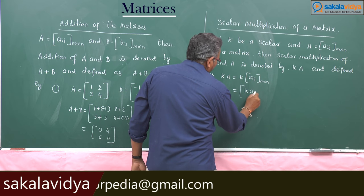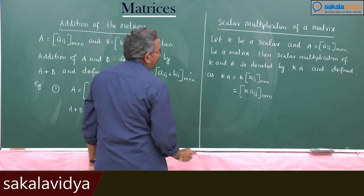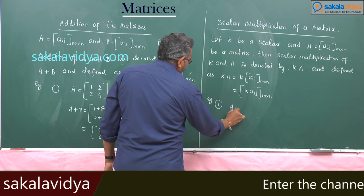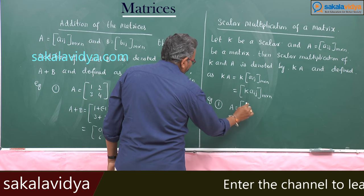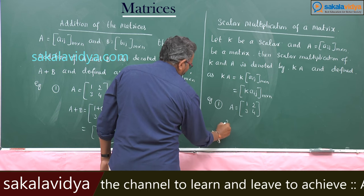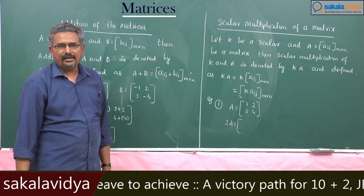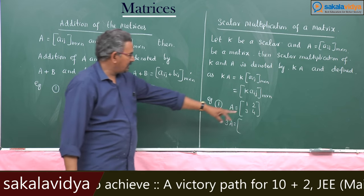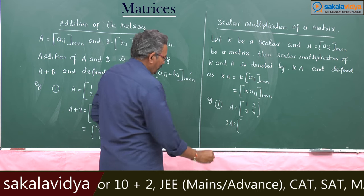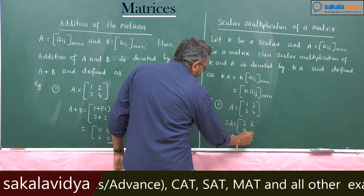So K of A_ij, m by n. Example: suppose A is equal to [1, 2, 3, 4]. If you want to find out 3A, each and every element of A has been multiplied by 3, we get [3, 6, 9, 12].